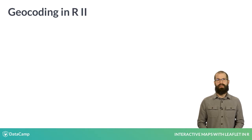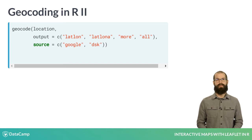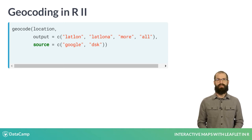Taking a closer look at the geocode function and a few of its arguments: we can use the location argument, which takes a character vector containing an address or the name of a place; the output argument, which allows us to select how much information will be returned; and the source argument, which lets us select if we want to use the data science toolkit or Google to conduct the geocoding. If you use Google, you're agreeing to the Google Maps API Terms of Service, and you should note that this API limits the number of queries you can run per day.